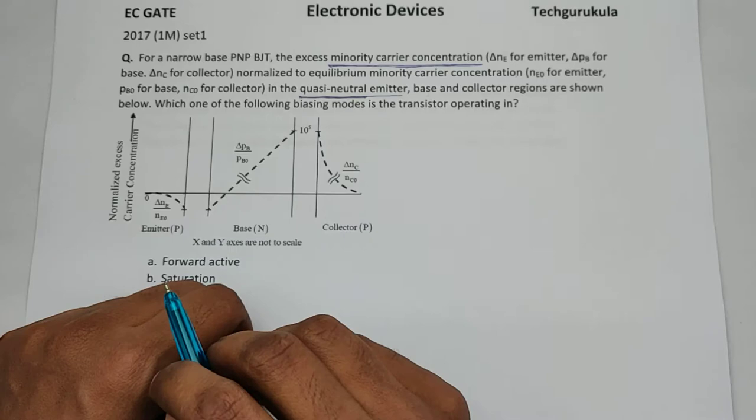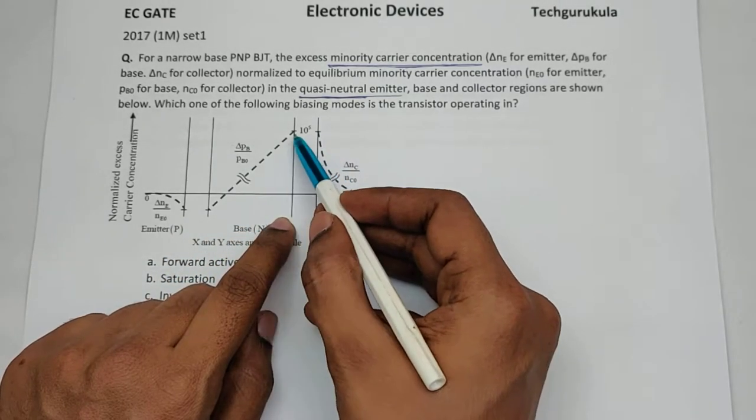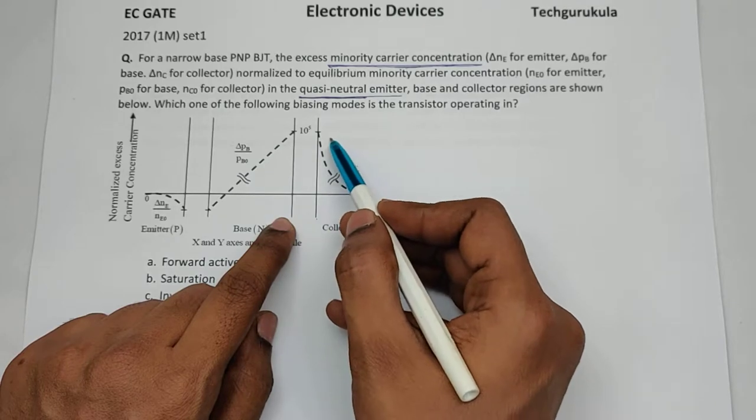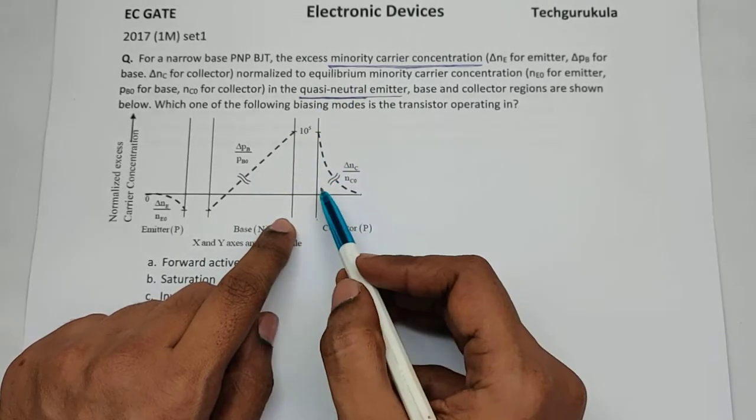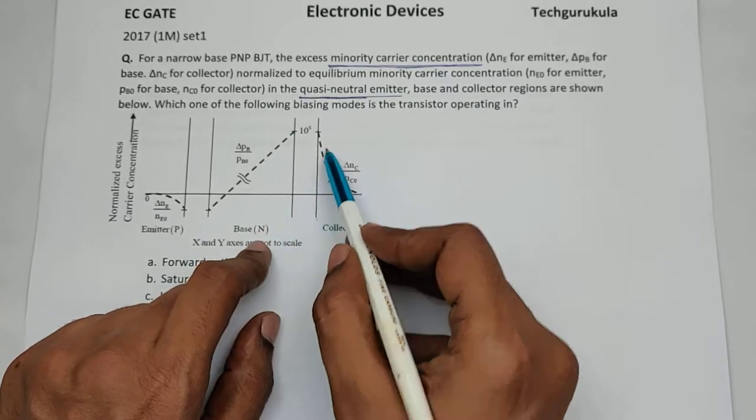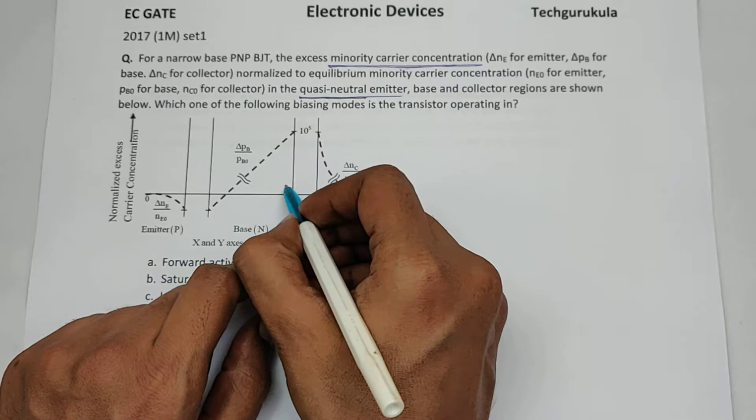have seen in BJT theory videos. If you look at this junction, the carriers are very high at this point, which means there is injection from collector to base here, and there is carrier concentration injection from here to here.